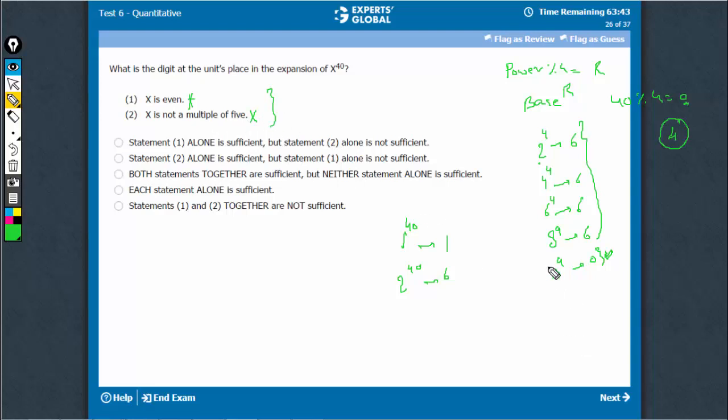On combining, if x is not a multiple of 5, it cannot end with a 0. Therefore, it has to be one of these 4 cases. In each of these 4 cases, the last digit is 6. So, combining works. The answer is Option C.